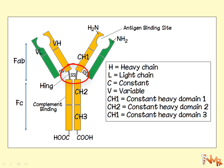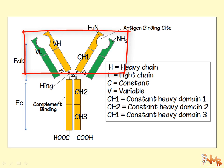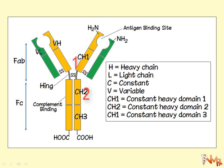The hinge region allows the Fab region to rotate and have flexibility, so the two binding sites can grab epitopes more effectively. The Fc portion's constant region has three segments designated CH1, CH2, and CH3. The complement-binding sites are located in the CH2 domain of the antibody.